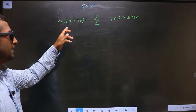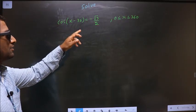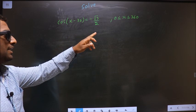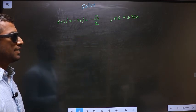Solve cos(x - 30) = -√3/2 where x lies in the interval 0 to 360 degrees.